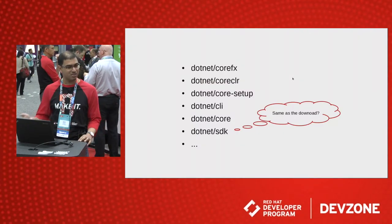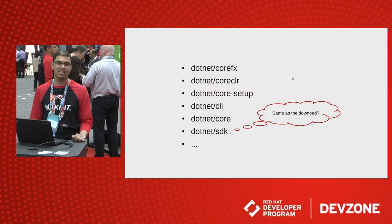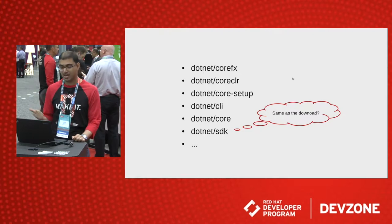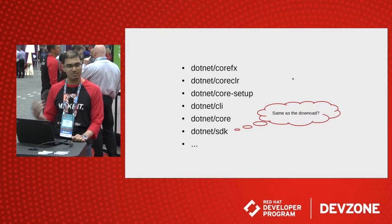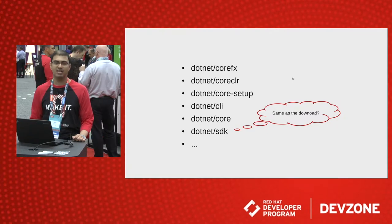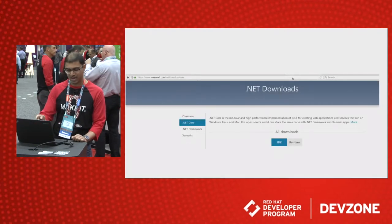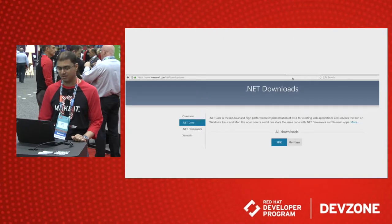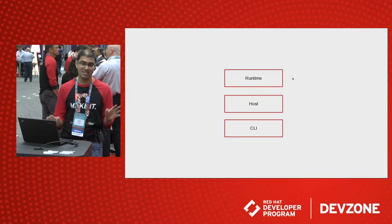You might think, okay, maybe there's more to the versions. Maybe I look at the GitHub repos and there's .NET Core FX, Core CLR, Core Setup, CLI, Core, and SDK. When you see SDK, you might think, okay, this is the SDK download. No, it isn't. Actually, let me break it down for you.